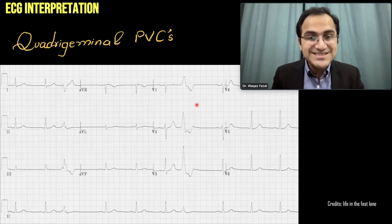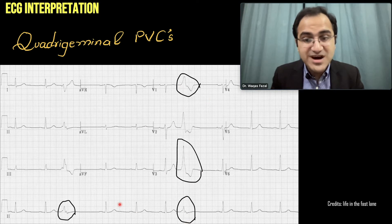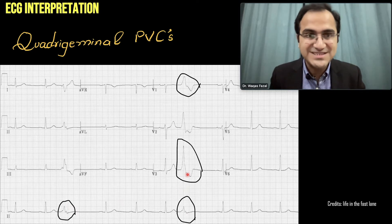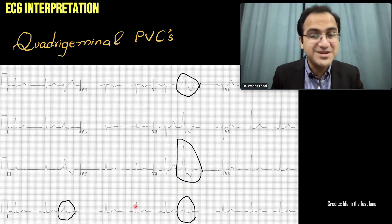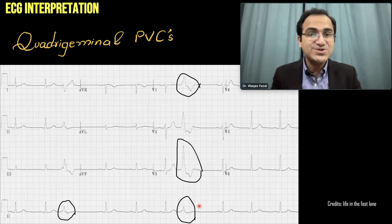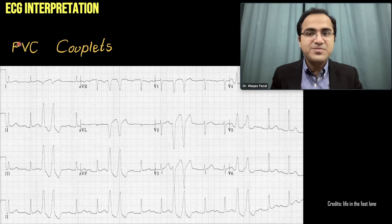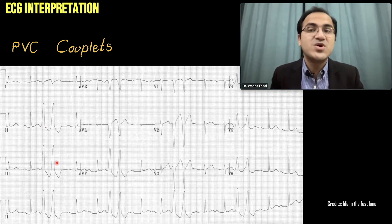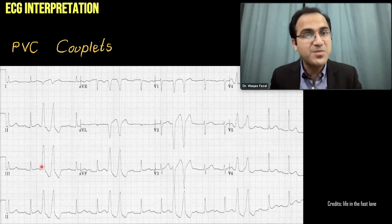In a quadrigeminal PVC ECG, wide QRS complexes with inverted T waves — bizarre-looking QRS complexes — appear as PVCs and disturb the normal sinus rhythm, visible in the R-R interval changes. A PVC couplet is when two PVC QRS complexes appear together in a pair — two consecutive wide bizarre QRS complexes forming a couplet.